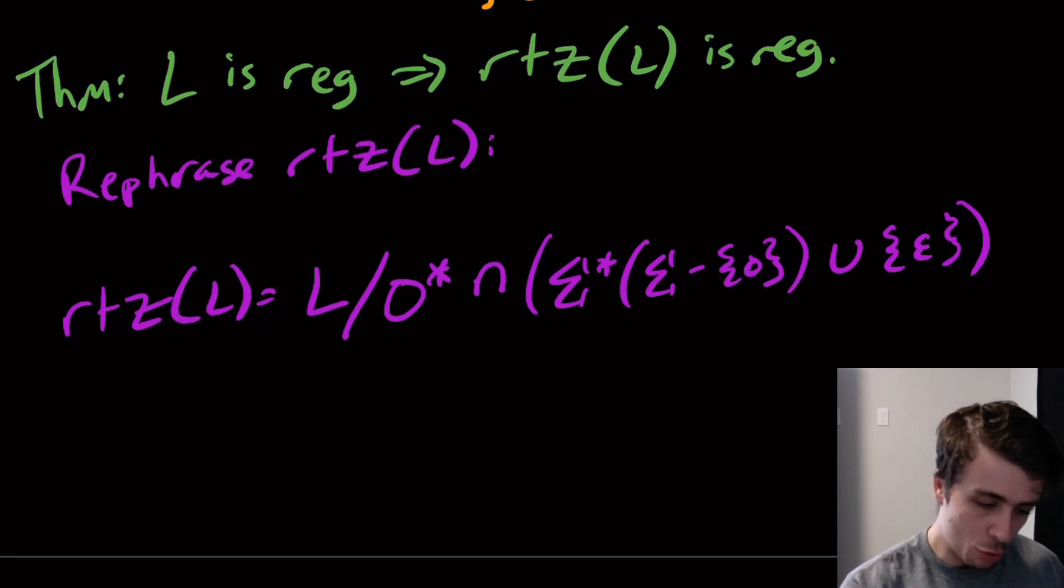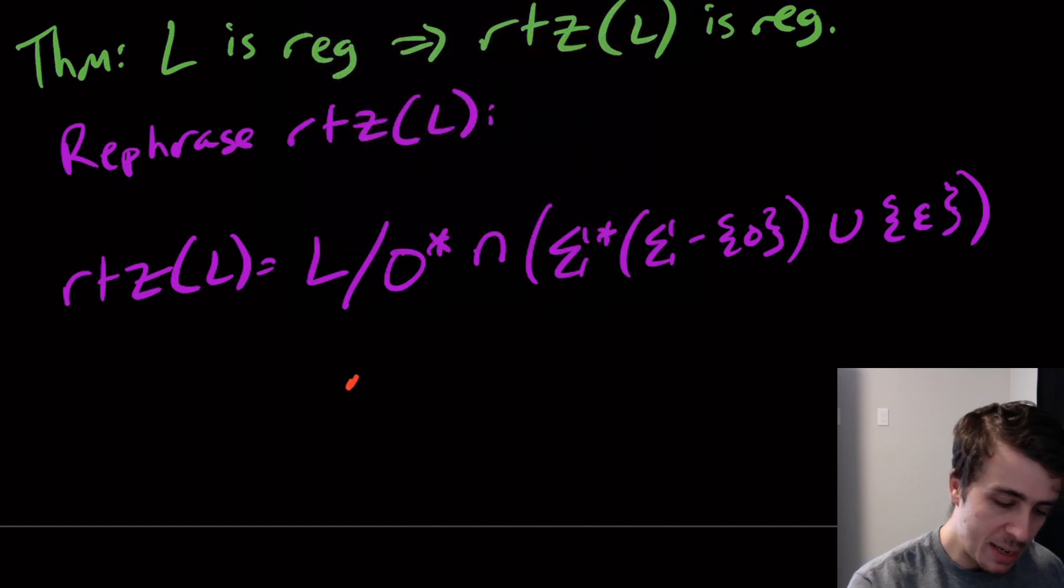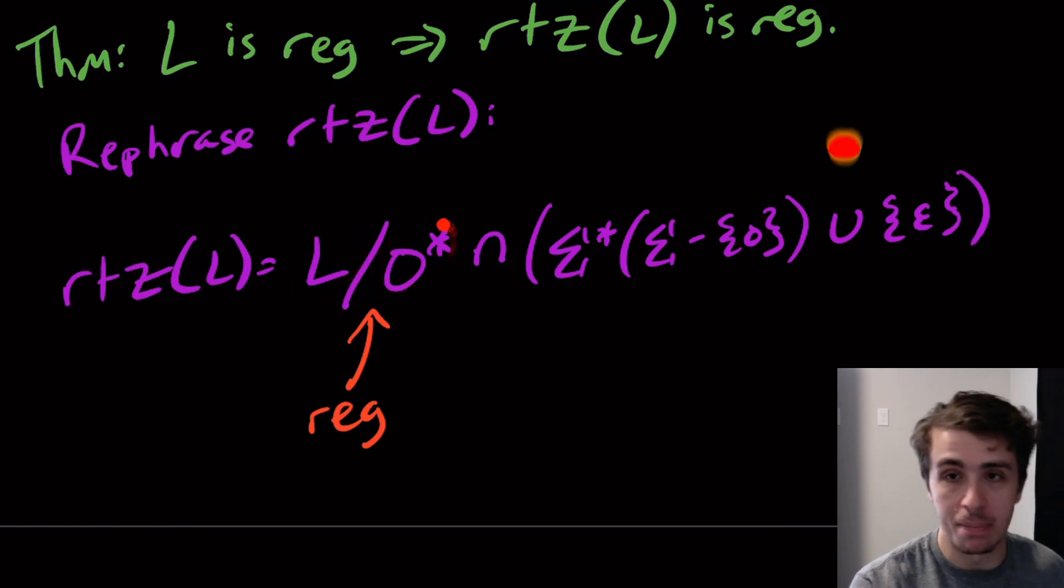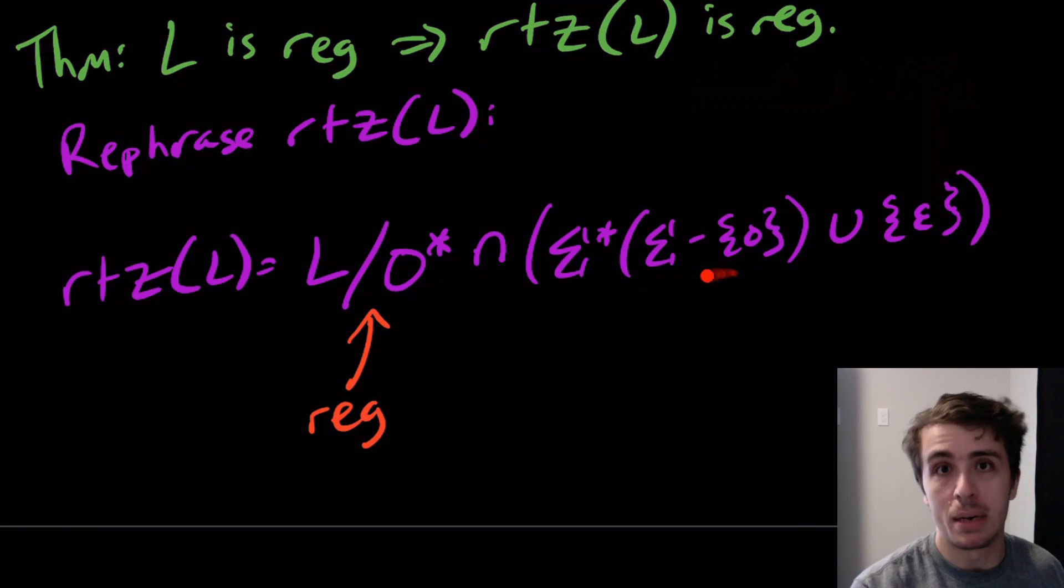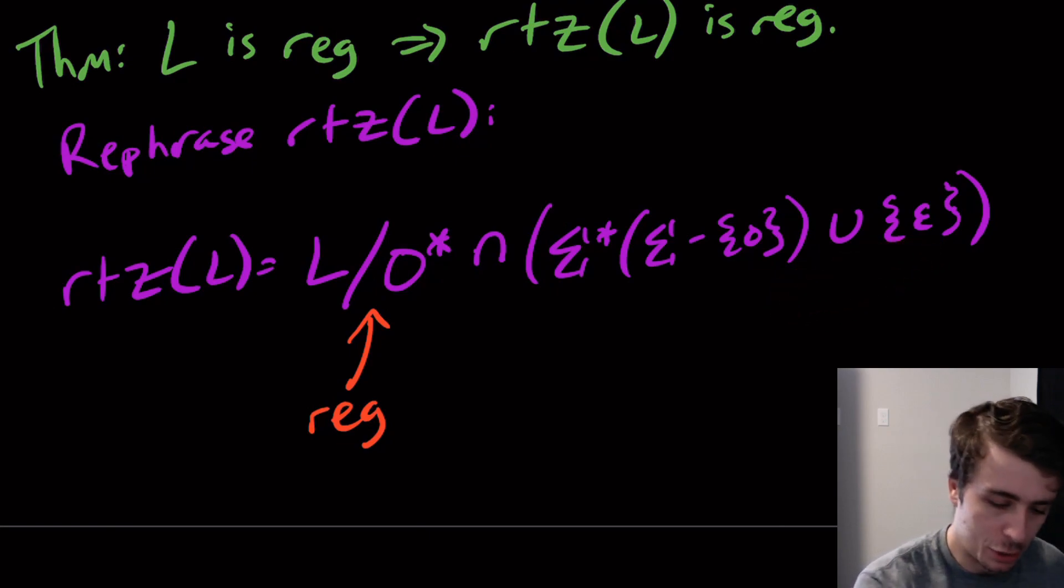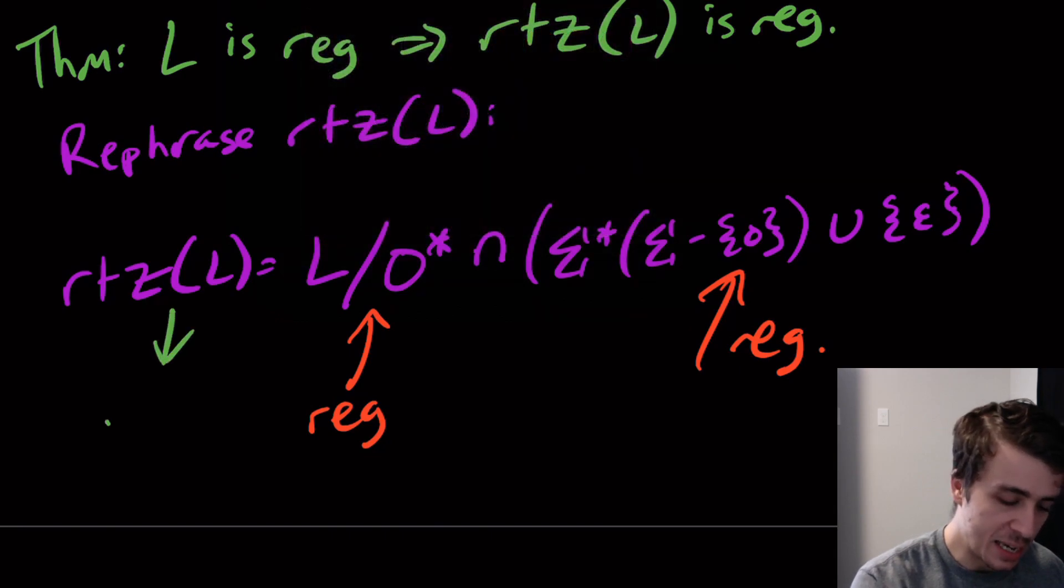That's actually a quick proof because we know from what we did that this thing is regular. Because L is regular, it doesn't matter what the second one is, although it is regular. And this one over here is regular because sigma star is regular, sigma take away a character is a finite language so it is regular, concatenation of the two is regular, and then adding back in a finite set which is also regular. Because we have the intersection of two regular languages, what we get out of this is that this guy is regular.